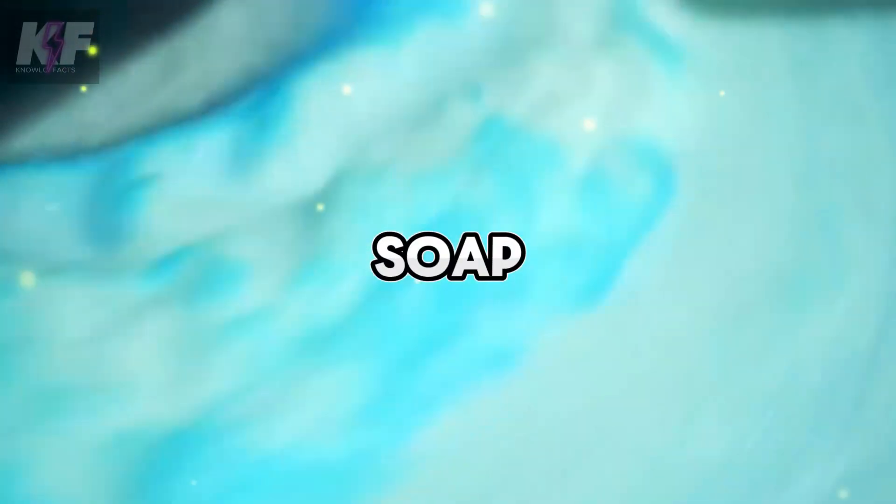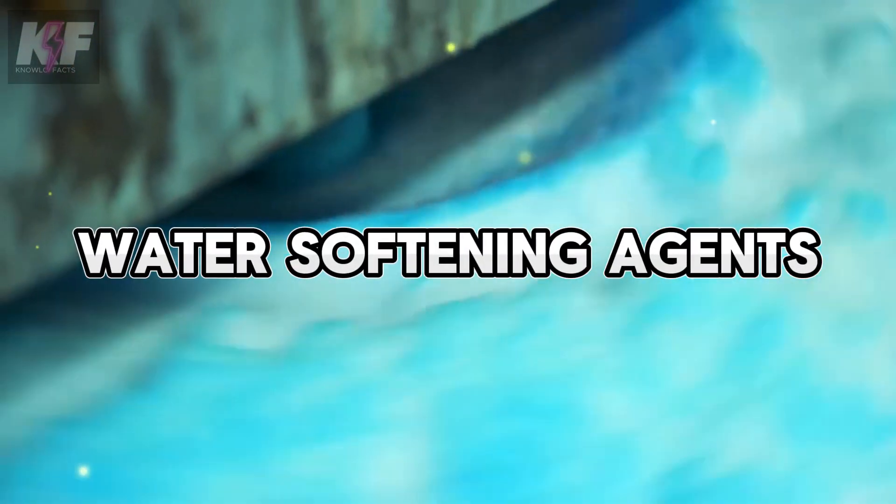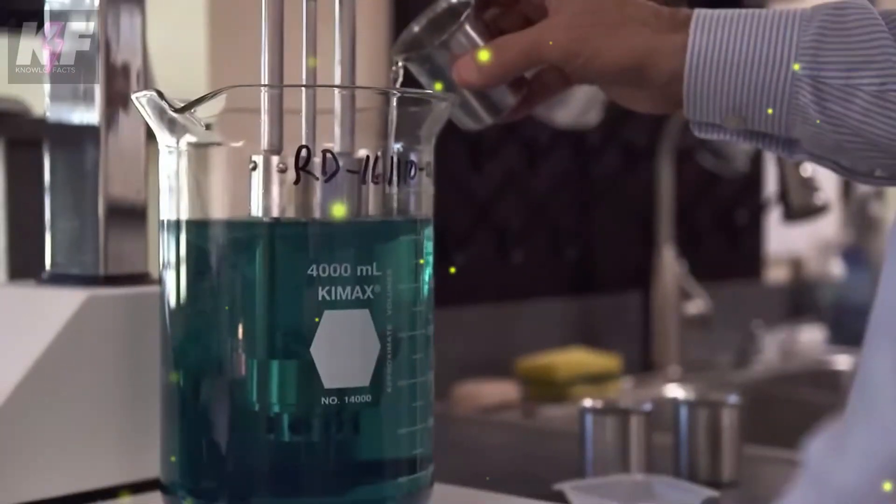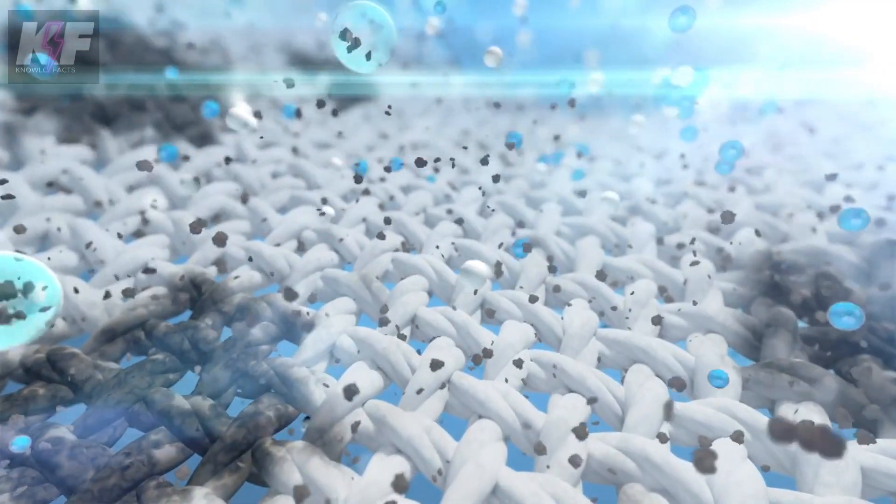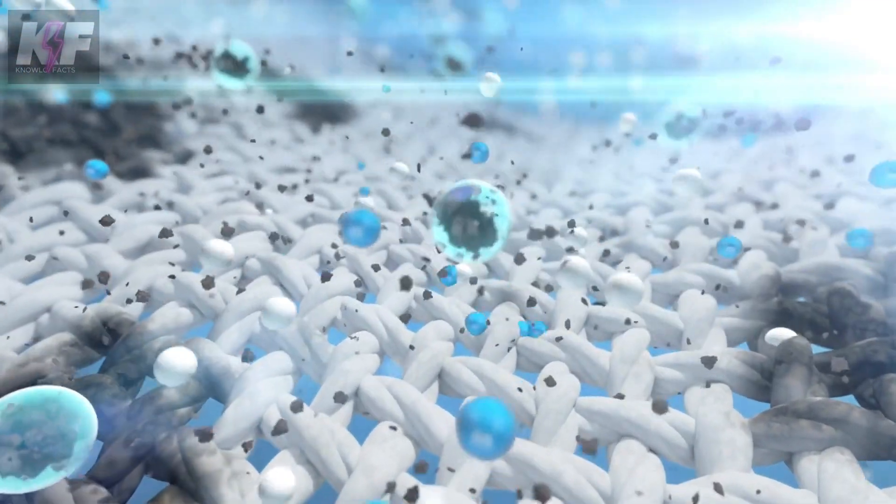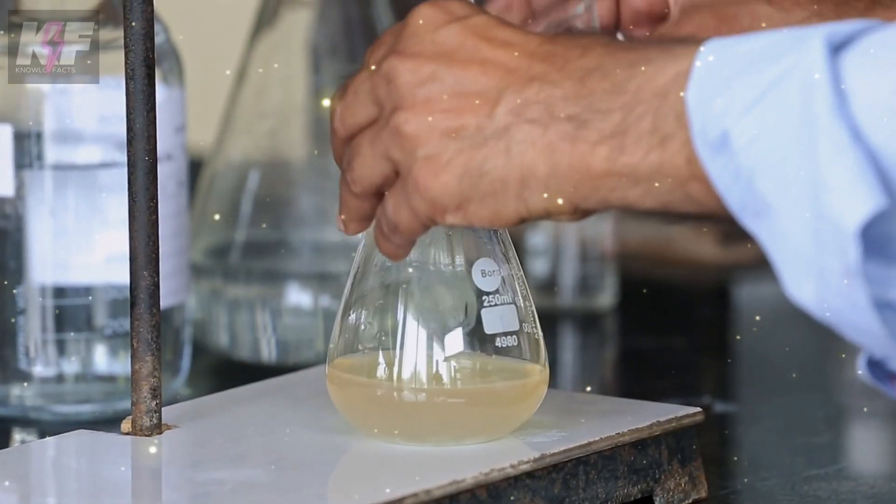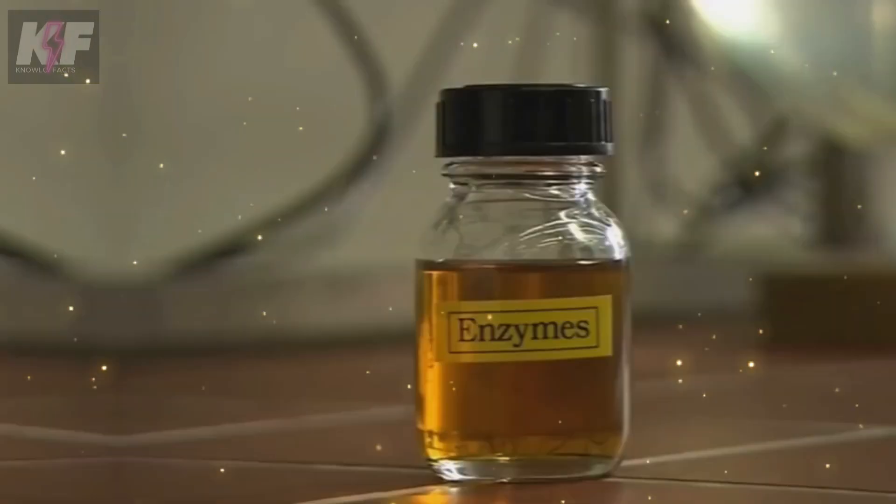The detergent includes soap, color protectors, and water softening agents to prevent mineral buildup in clothes. This will be a powerful detergent for cleaning and degreasing clothes. To say goodbye to persistent stains like oil or ketchup, the laboratory adds two special chemical ingredients, surfactants and enzymes.